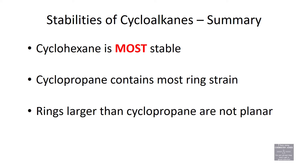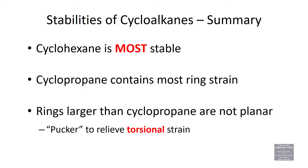Rings larger than cyclopropane are not planar — they pucker and change their orientation to try to relieve torsional strain. Torsional strain occurs because electrons are negatively charged and repel each other, so they don't want to be close together. That's what causes staggered to be more stable than eclipsed in Newman projections. So cyclic molecules shift to different conformations to relieve their torsional strain.